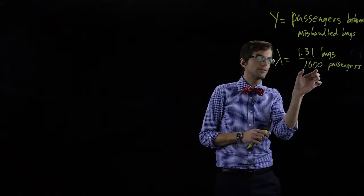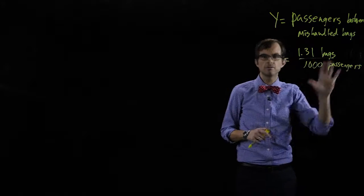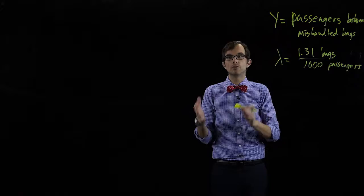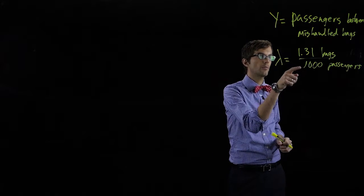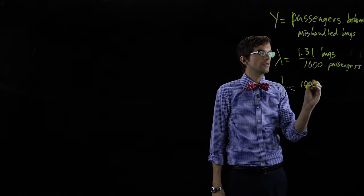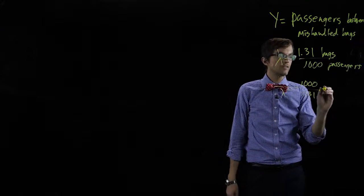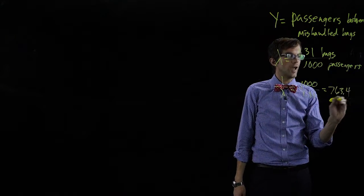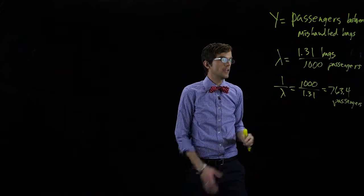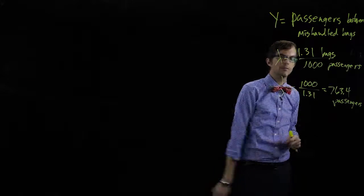These really are discrete numbers — we can't have 973.2 passengers — but for our purposes let's treat this as a continuous random variable. So what is the average number of passengers between occurrences? This is occurrences per passengers, and one over that gives us the number of passengers between occurrences: 763.4 passengers. The average interval between mishandled bags is 763.4 passengers.